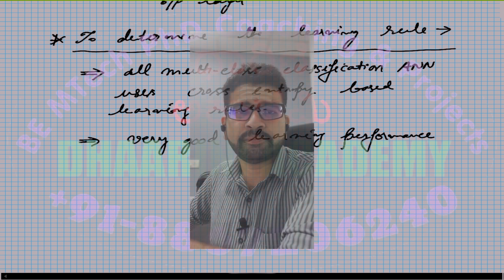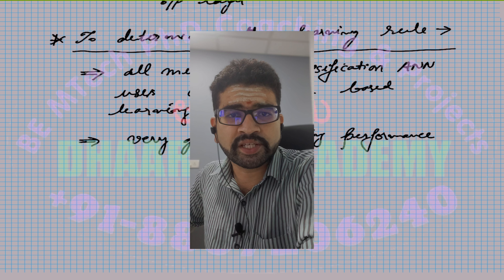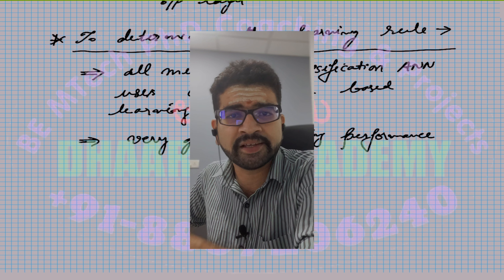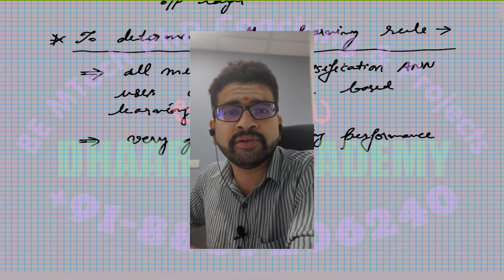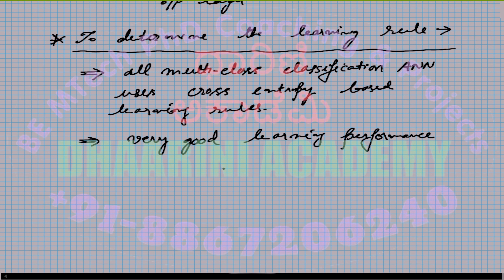Looking at the performance curve from the previous session comparing errors with CE and without CE: cross entropy is the best — it achieves very good learning performance with very few epochs, and it is also pretty simple with no complicated calculations. The simplicity of the cross entropy function is an additional advantage.